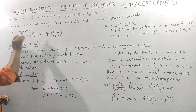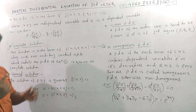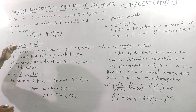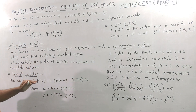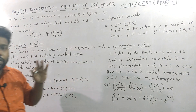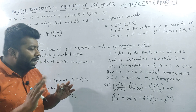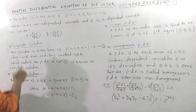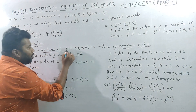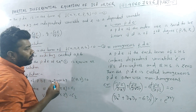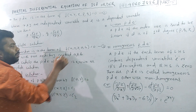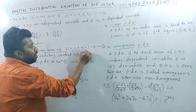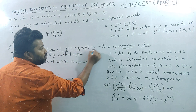We have a solution for this equation, and we have different types of solutions: the complete solution and the general solution. What is the complete solution? Any function in the form of f of x, y, z, a, b is equal to 0.